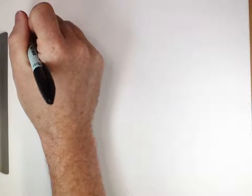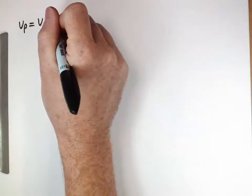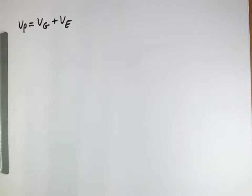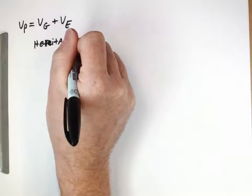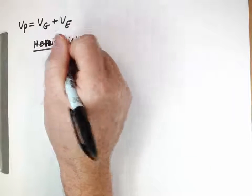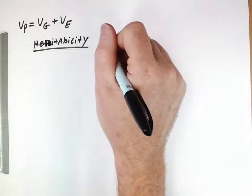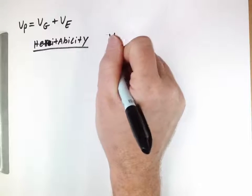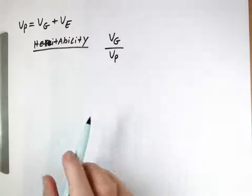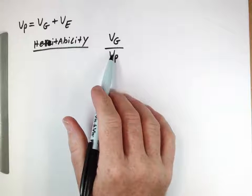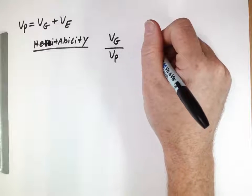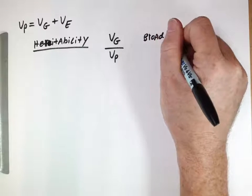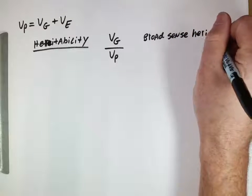Building on from here, phenotypic variance is the sum of genotypic variance plus environmental variance. Now we can think about heritability, which is a topic from earlier in the semester. Heritability is basically the amount of variance due to genes divided by the total — so this tells us the proportion of overall phenotypic variance that is because of genes. We'll term this the broad sense heritability.